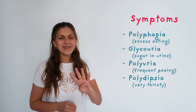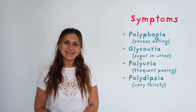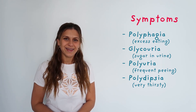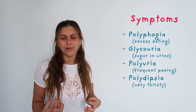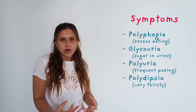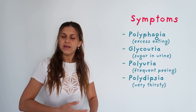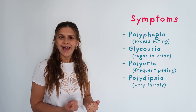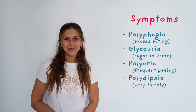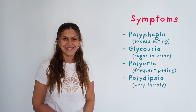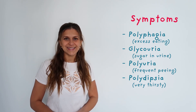The fourth symptom is polydipsia — being very frequently thirsty. Because this person is peeing a lot, the body feels dehydrated and will want to drink. Those are the four main symptoms of diabetes.